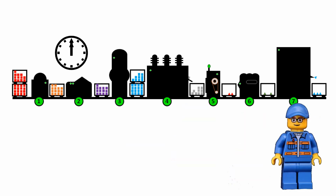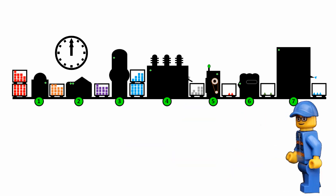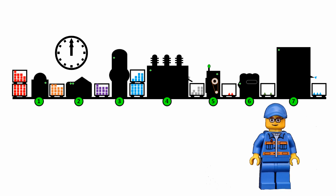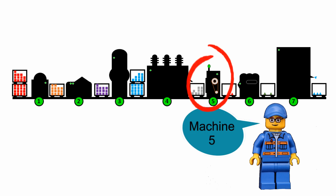All machines are up and running — we can see the green light and hear their soft humming. Work in progress is quite high in front of every machine from 1 to 5, and comparatively low after machine 5. Kevin makes a mental note that machine 5 could be the bottleneck.